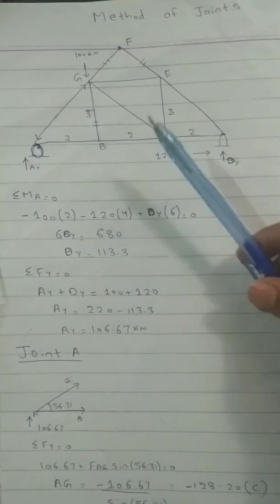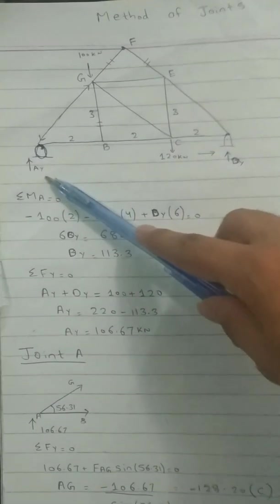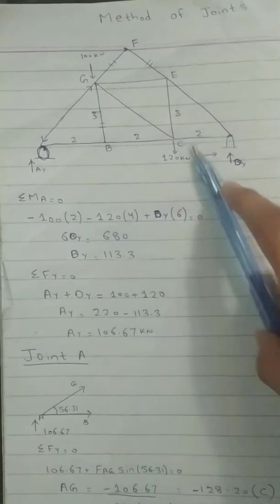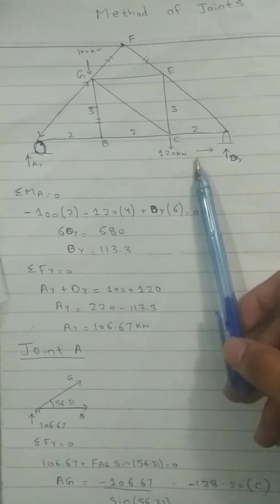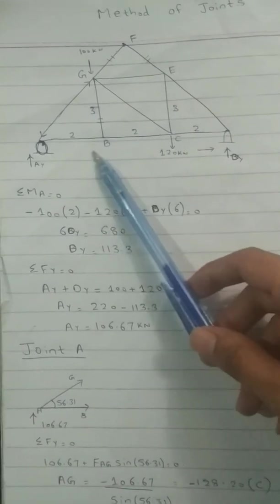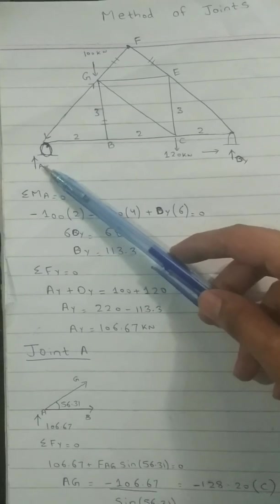Going towards the external reactions, here is a roller support and here is a pin support. No forces acting towards the x direction, so it will be zero obviously, and we will take first moment at point A.